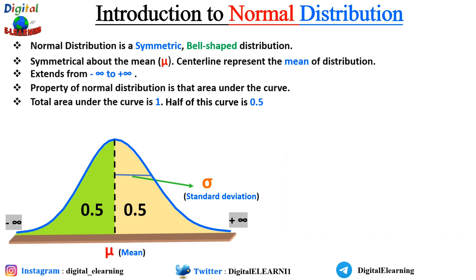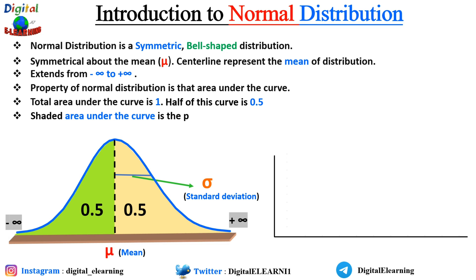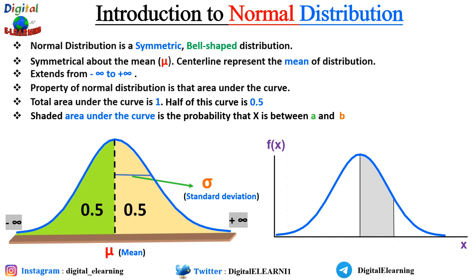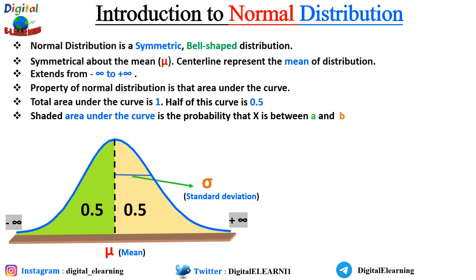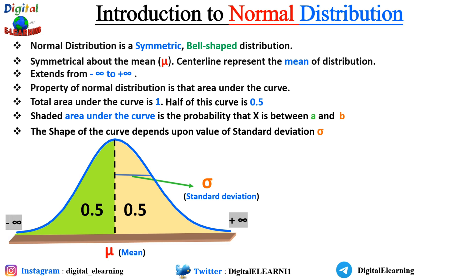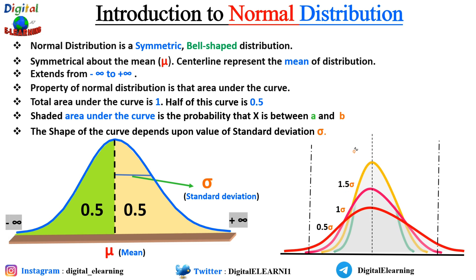This curve has a single peak, meaning it is uni-modal and not bi-modal or multi-modal. Because it is symmetric about the center, its mean, median, and mode are the same values. The shaded area under the curve represents the probability that X lies between A and B. One thing to note is that the probability of any individual value is 0. The shaded area depends upon the value of the standard deviation — 0.5 sigma, 1 sigma, 1.5 sigma, and 2 sigma — all depend on the value of sigma from the mean.